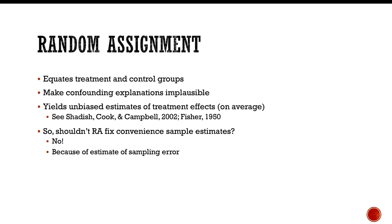So that brings us to random assignment. So random assignment equates treatment and control groups on average. That's what we talked about last time. And so by so doing, it makes confounding explanations implausible and it yields unbiased estimates of the treatment effect on average. Okay. There's a whole lot of research that says that. And so you might be reading this and saying, all right, random assignment equates treatment and control groups, removes confounding explanations and yields unbiased estimates of the treatment effect. So it seems logical that random assignment should fix the convenience sampling estimates. Am I right?